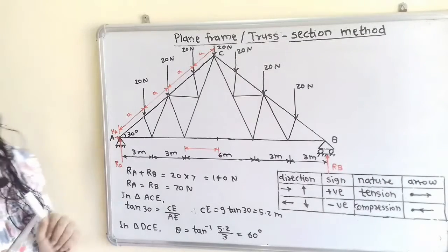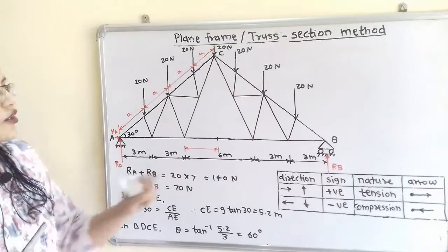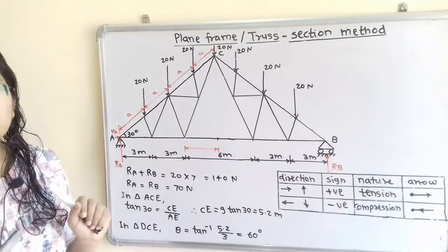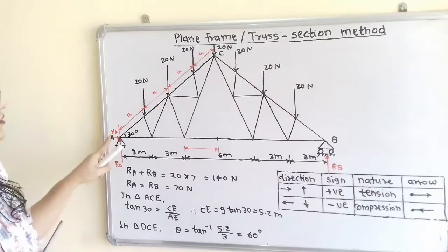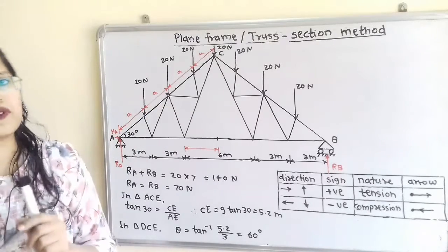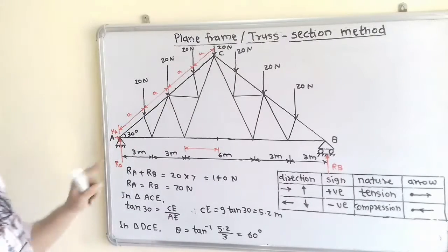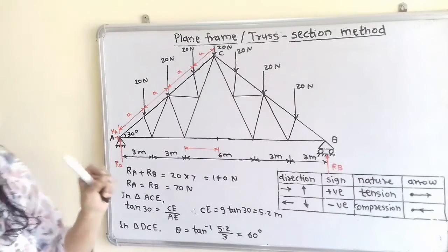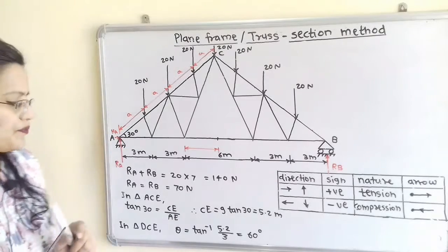Now for the horizontal component — there is no horizontal external force, so the summation of all horizontal forces is equal to 0, and therefore HA is also equal to 0.